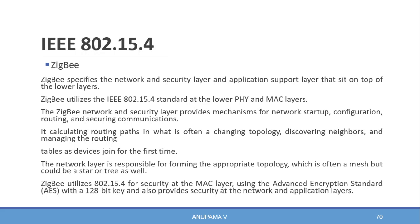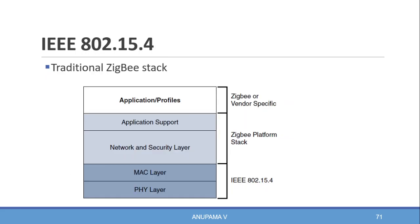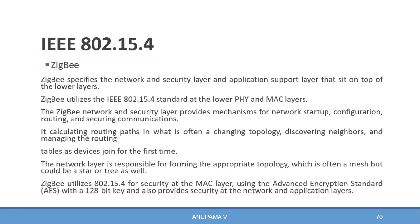The ZigBee network layer is responsible for forming the appropriate topology, which can be mesh, star, or tree topology. The ZigBee application support layer interfaces the lower portion of the stack with higher layer applications. ZigBee predefines many application profiles for certain industries and vendors, such as home automation and smart energy. ZigBee utilizes 802.15.4 security at the MAC layer using Advanced Encryption Standard (AES) with a 128-bit key.